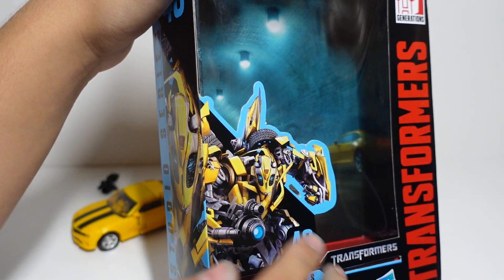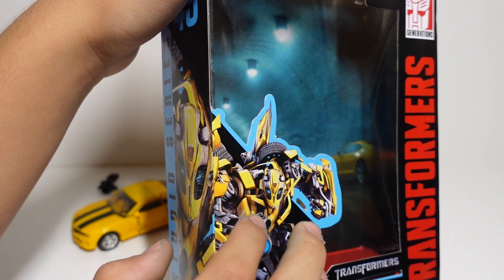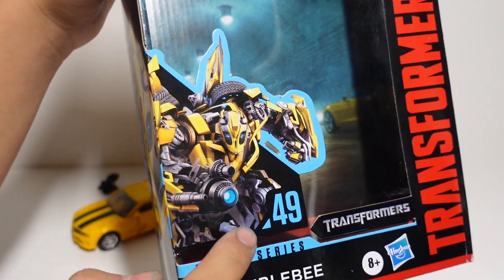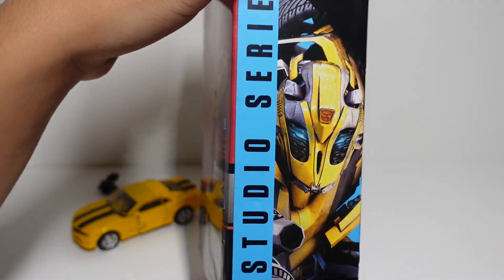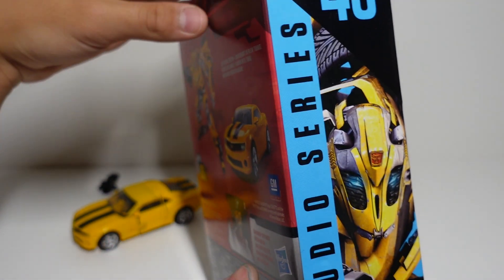Right here we can see another, the same picture of Bumblebee, but just half of his body here. He is Studio Series number 49. He is a Deluxe class. Right here we can see his face right here. And that's it.